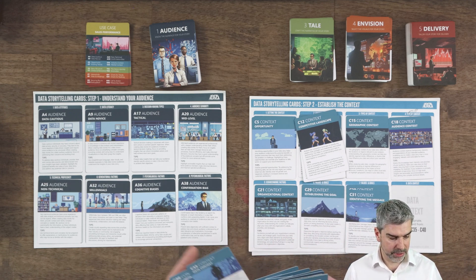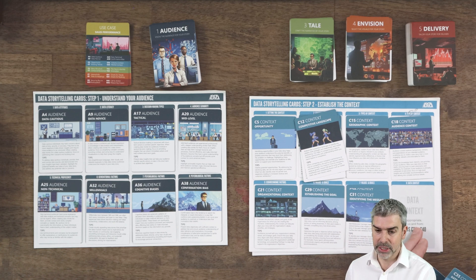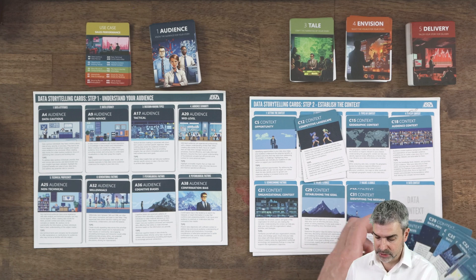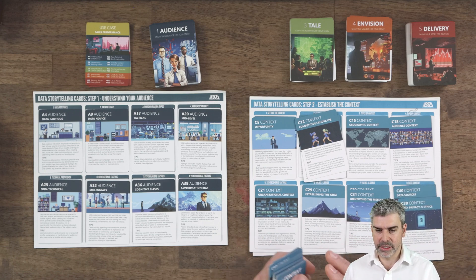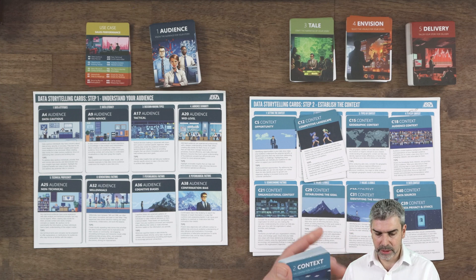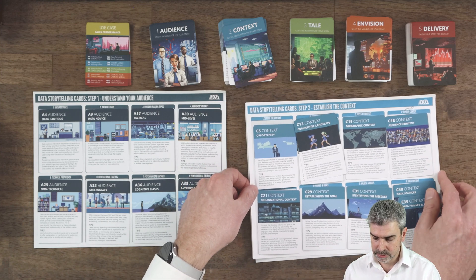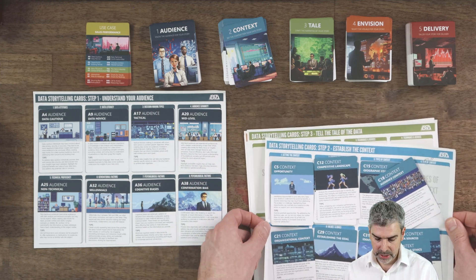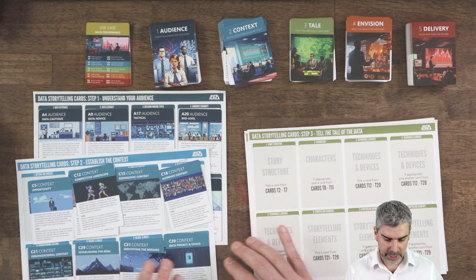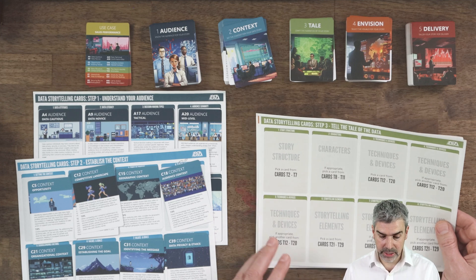Because we have a data cautious and data novice audience, we want to pay particular attention to the data context — letting them know what data sources we're pulling from, as well as any data privacy and data ethics concerns that might exist. With that in mind, we can move on to the next group. If you have space on your table, you'd lay these out beside each other. We're going to move on to our next category: telling the tale of our data.